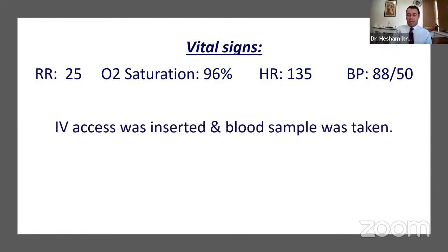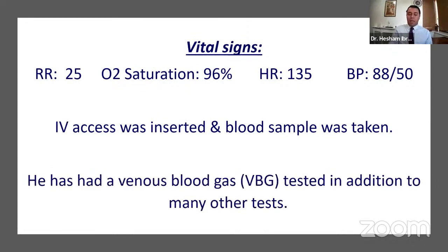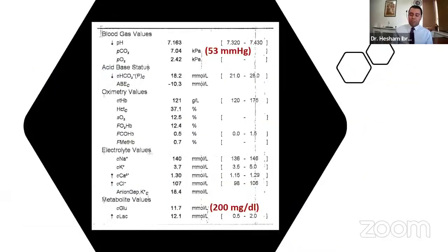The nurse was concerned and moved the patient immediately to the resus room. I was in resus that day. We got IV access, took bloods, and sent a venous blood gas. The gas showed a pH of 7.16, pCO2 of 7.4 kPa (53 mmHg), indicating an element of respiratory acidosis — though this was a venous sample, so arterial may differ.